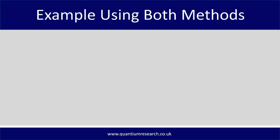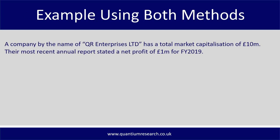Let's give an example using both formulas. A company by the name of QR Enterprises Limited has a total market capitalization of £10 million. In their most recent annual report, they stated a net profit of £1 million for the full year 2019. To calculate the P/E ratio, we take the £10 million total market capitalization and divide it by the £1 million net profit — otherwise known as total income — and the P/E ratio equals 10.